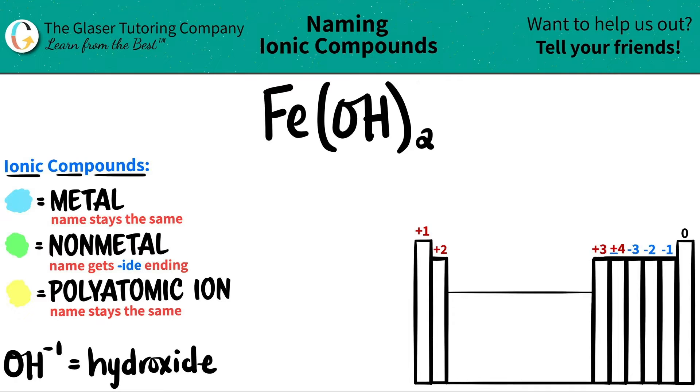Today, we are going to be naming the ionic compound Fe(OH)₂. Now, here's a little trick. If you see that you have an ionic compound with three or more different elements, you know that you're dealing with at least one polyatomic ion.